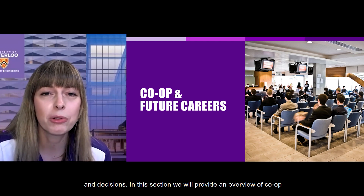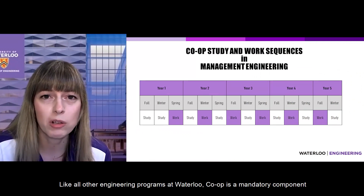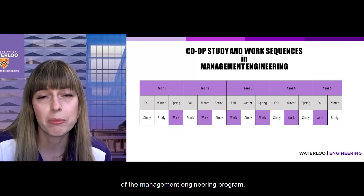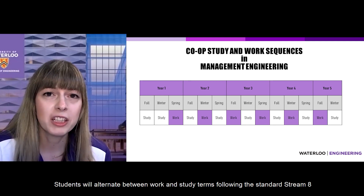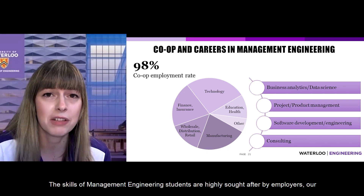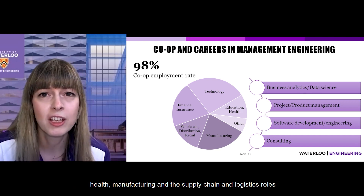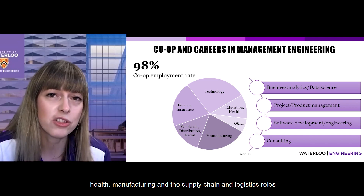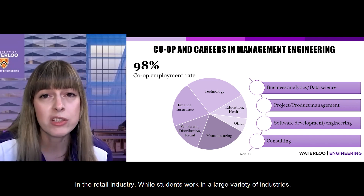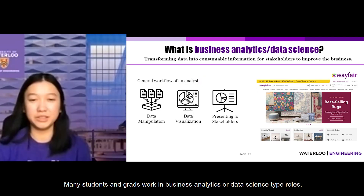We'll now provide an overview of co-op and careers in management engineering. Like all other engineering programs at Waterloo, co-op is a mandatory component of the program. Students alternate between work and study terms following the standard stream-eight sequence. The skills of management engineering students are highly sought after by employers, and our students and grads work in diverse industries including technology, finance, health, manufacturing, and supply chain and logistics in the retail industry. The roles they take on typically include business analytics or data science, where working as an analyst means transforming data into information to support critical business decisions.